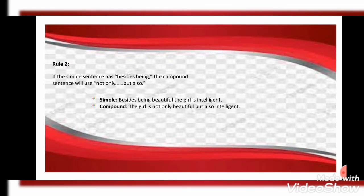The second rule says: if the simple sentence has 'besides being,' the compound sentence will use 'not only...but also.' Example: Simple — 'Besides being beautiful, the girl is intelligent.' Compound — 'The girl is not only beautiful but also intelligent.'